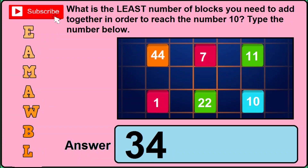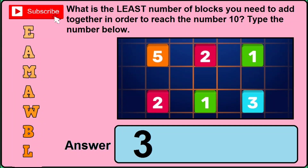In version 2 of this question, it asks: what is the least number of blocks you need to add together in order to reach the number 10? You can see the image starts with 4, 4, and the correct answer will be 3, 4, 4, 4. In version 3, it asks the same question to reach the number 10, and the image starts with 5, 2, 1, 2, 1, 3 — the correct answer will be 3.